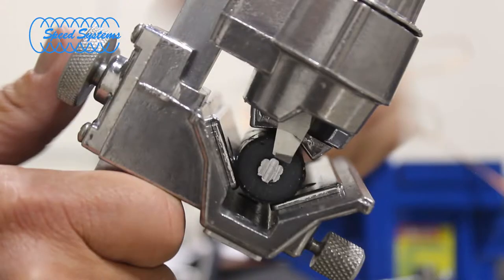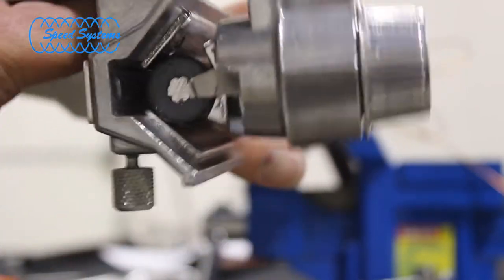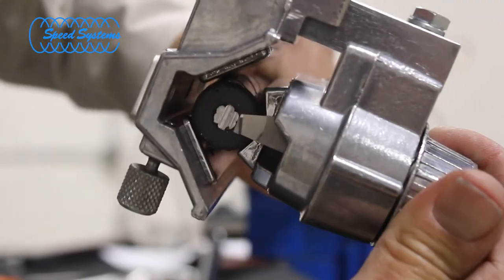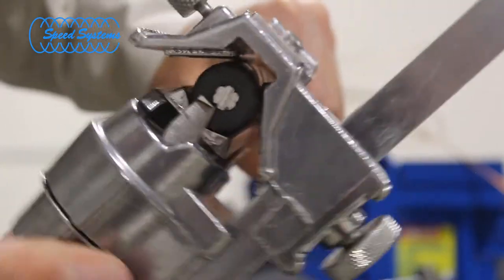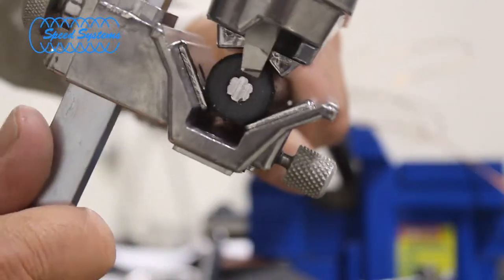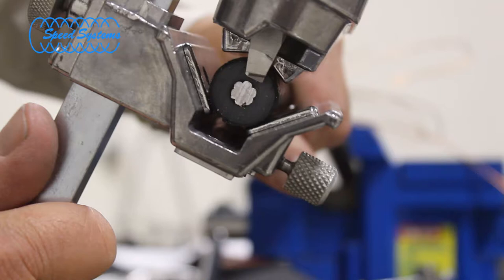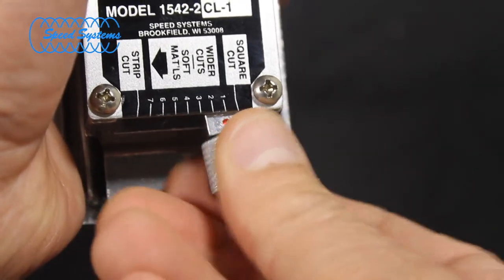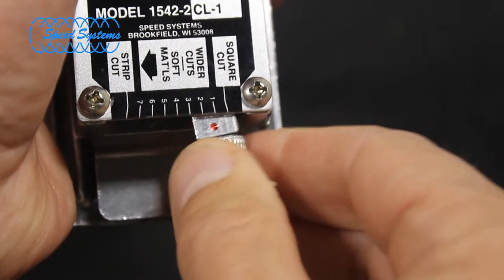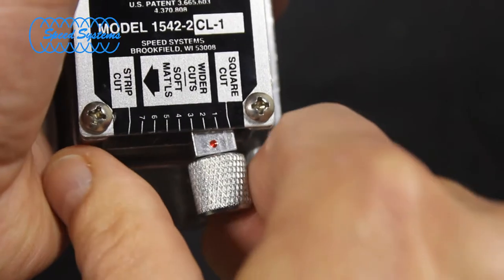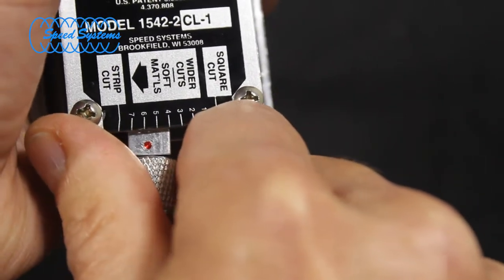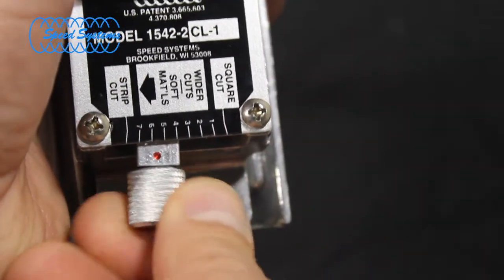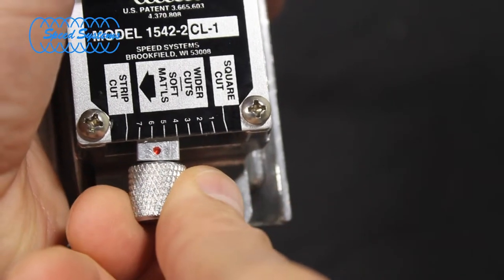Set the blade depth so the blade misses the conductor by approximately 1 sixteenth of an inch. Rotate the tool backwards around the cable before cutting the insulation to ensure that the blade will not hit the conductor at any point. Adjust the blade depth if necessary and recheck. Set the blade cutting angle to the width of spiral you desire. Approximately 1 quarter inch is ideal. As a general rule, harder insulation materials require a smaller spiral than softer materials.